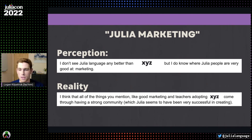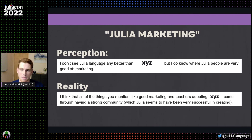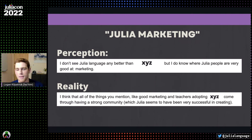The reality — which actually came from the same thread where someone else responded — is: 'I think all the things you mentioned, like good marketing and teachers advocating for X, Y, and Z, come through having a strong community, which the Julia community seems to have been very successful in creating.' I really love this example, which highlights that the way to get people to advocate for something is for them to really enjoy using it and be really excited about it.